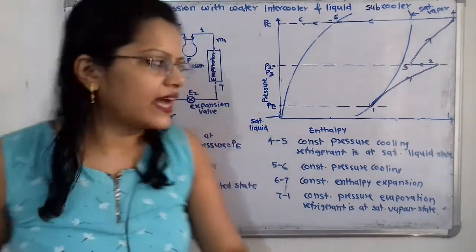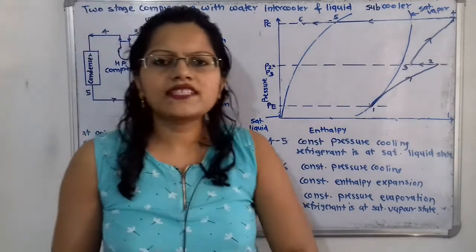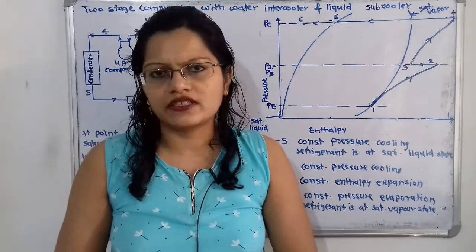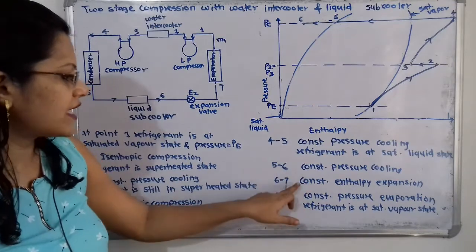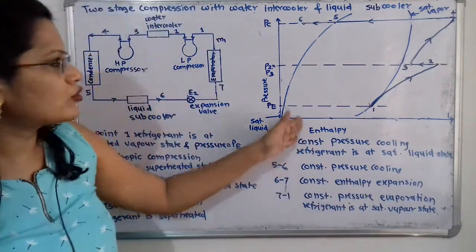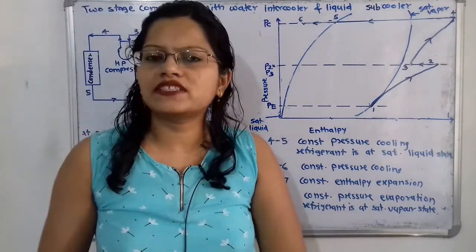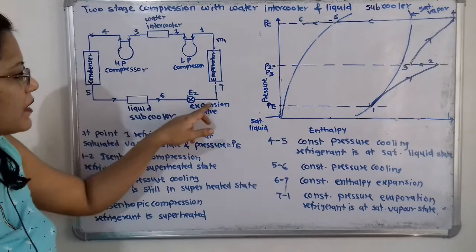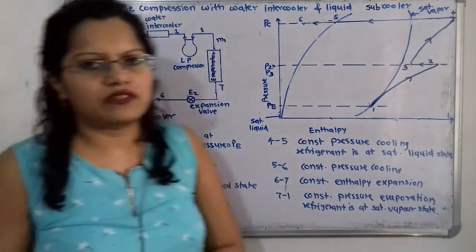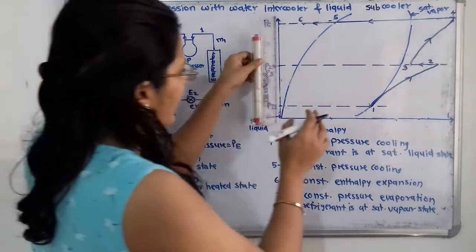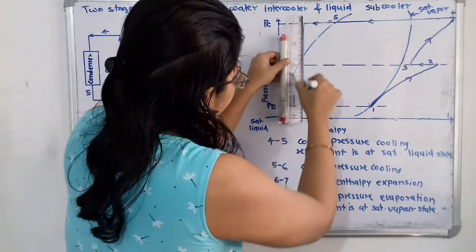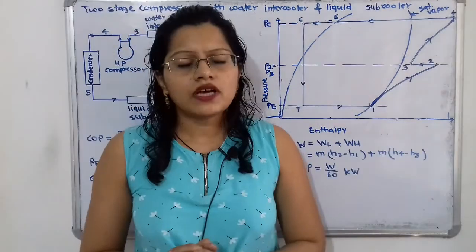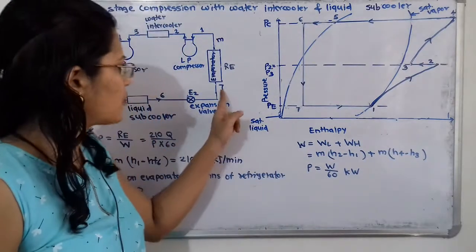After the subcooler, the refrigerant enters the expansion valve. During expansion, pressure decreases and temperature also decreases, but the process takes place at constant enthalpy. So we draw a straight vertical line downward from point 6. This expansion continues down to the evaporator pressure PE, giving us point 7.